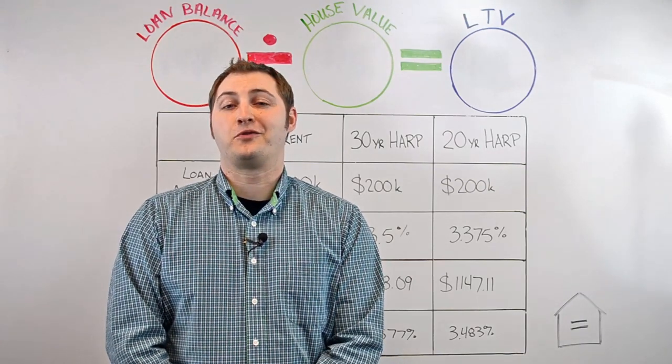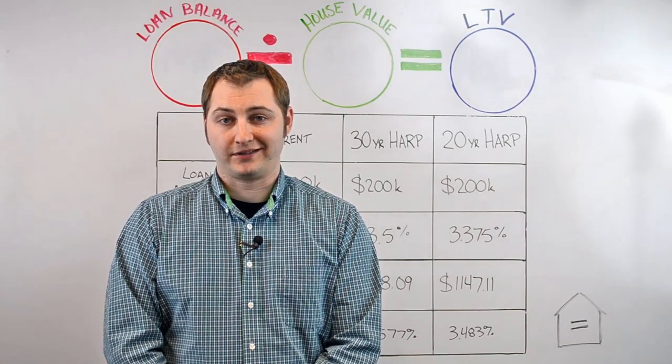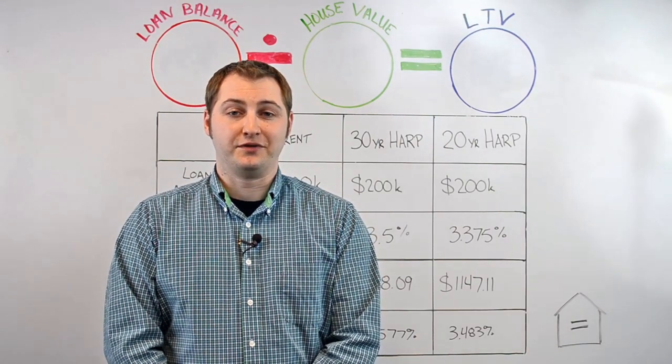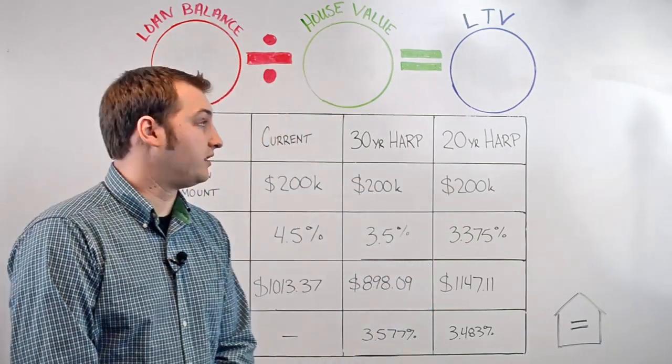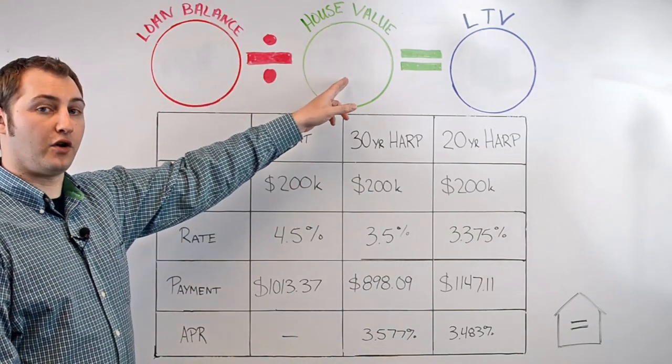Right now, we have many homeowners that are concerned about the value of their property. Under traditional lending guidelines, we do have to consider the restrictions on the loan-to-value. Loan-to-value is calculated by dividing the loan amount by the value of your home.